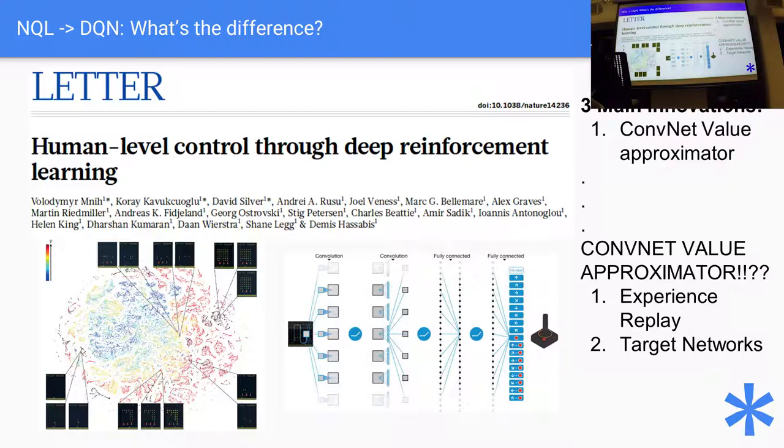And basically what they did was they took this concept of neural Q-learning, which had been floating around for ages, and they put in this ConvNet value approximator, which no one had thought about doing. Because neural Q-learning was super unstable, even with dense nets, which were the most well understood.